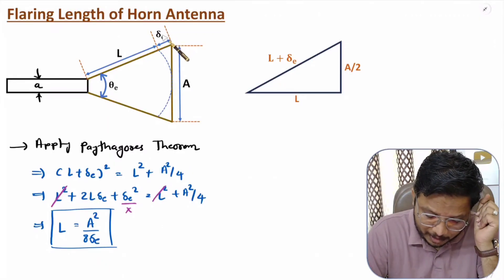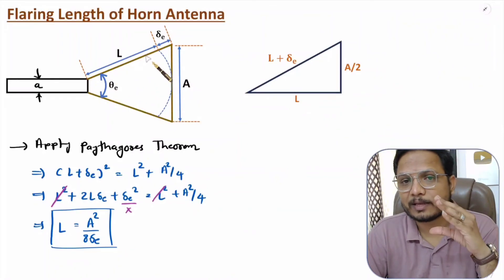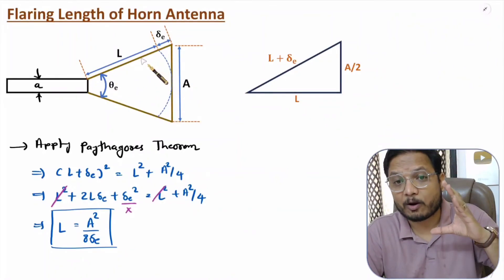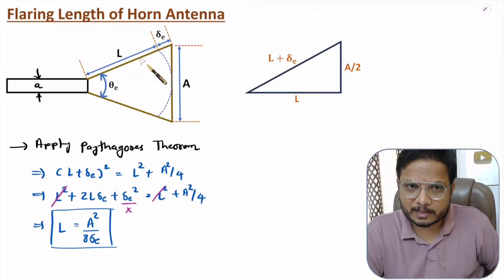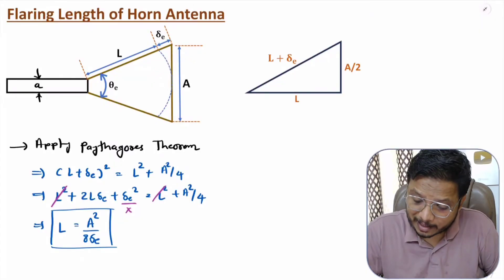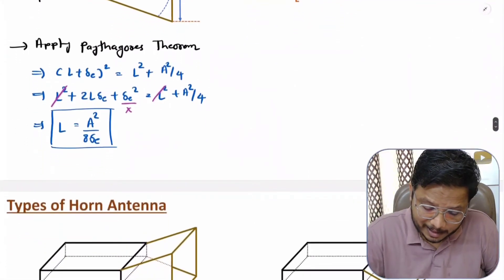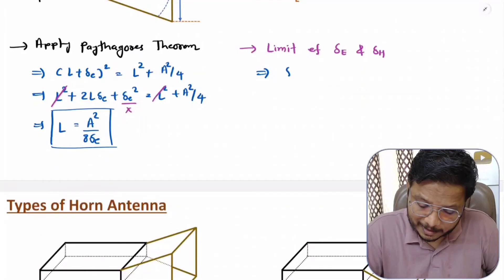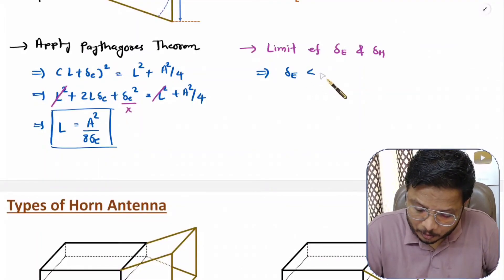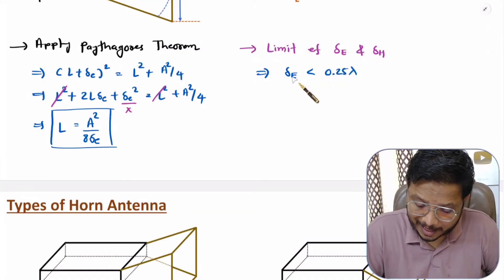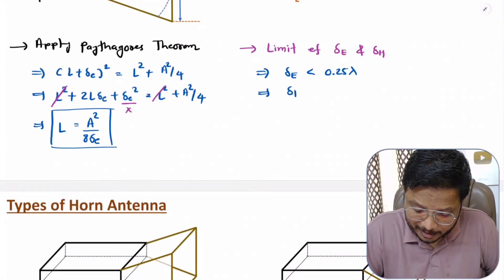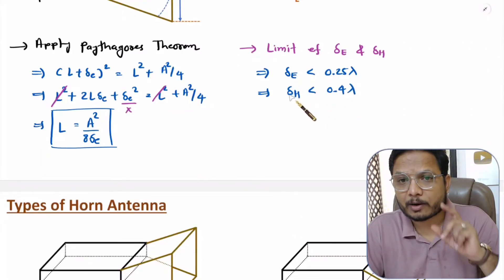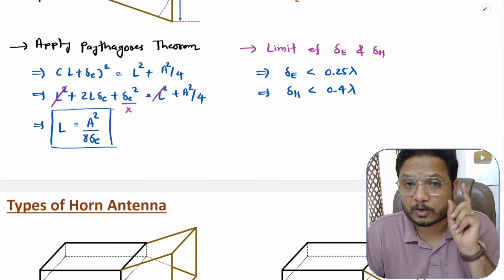An important question is: what is the limit of flaring? If you increase flaring, the dimensions of the horn increase, but there is a threshold. The limit on delta-E is up to 0.25 lambda, and the limit on delta-H is up to 0.4 lambda. You cannot exceed these values. If delta-E and delta-H go beyond these limits, the horn antenna will stop radiating.